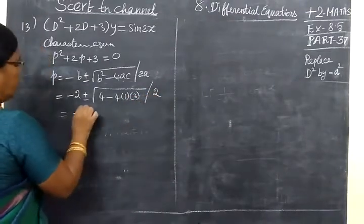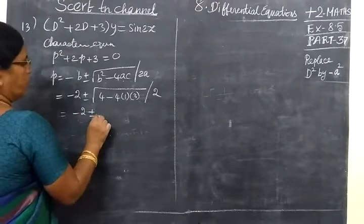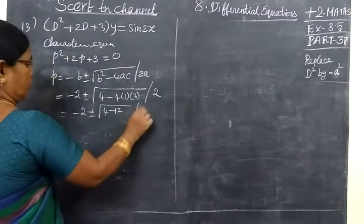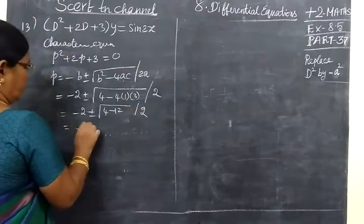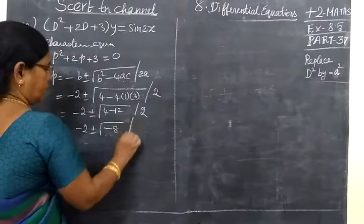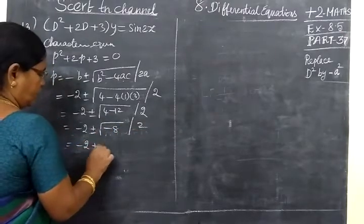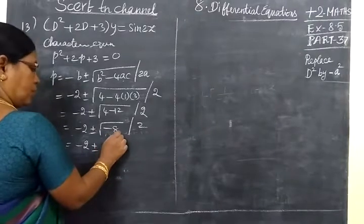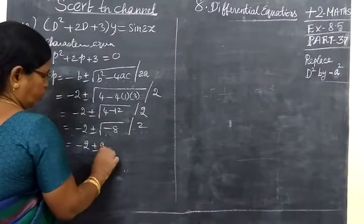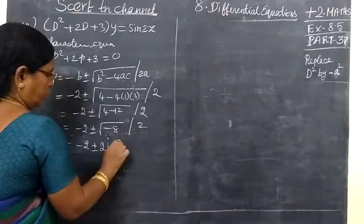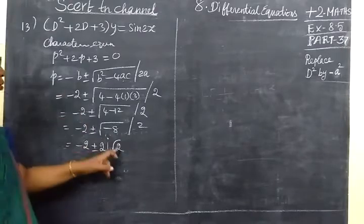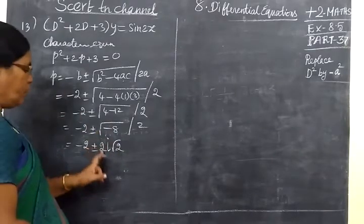2 equal to -2 ± √(4 - 12) / 2. So -2 ± √(-8) / 2. So -2 ± √... So now 4 can be taken out.